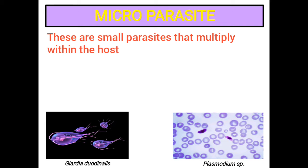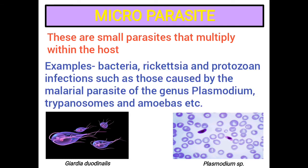Microparasites: These are small parasites that multiply within the host. Examples of microparasites include bacteria, rickettsia, and protozoan infections, such as those caused by the malarial parasites of the genus Plasmodium, trypanosomes, and amoebas, etc.